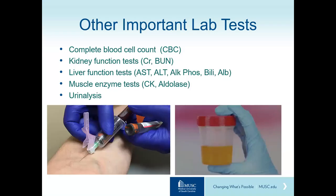In addition to autoantibody testing, there are other important lab tests performed at the initial evaluation and at subsequent follow-up. These include a complete blood cell count, a metabolic panel measuring kidney and liver function tests, as well as muscle enzyme testing and a urinalysis.